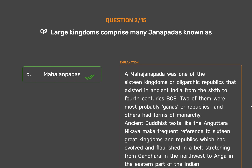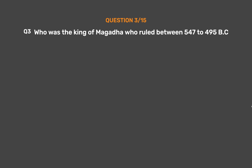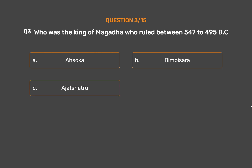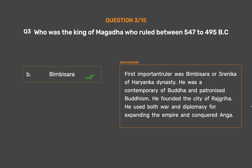Question No. 3. Who was the king of Magadha who ruled between 547 to 495 BC? Option A: Asoka. Option B: Bimbisara. Option C: Ajatashatru. Option D: Nanda. The correct answer is Option B: Bimbisara. The first important ruler was Bimbisara, or Shrenika, of the Haryanka dynasty. He was a contemporary of Buddha and patronized Buddhism. He founded the city of Rajgriha and used both war and diplomacy for expanding the empire, conquering Anga.